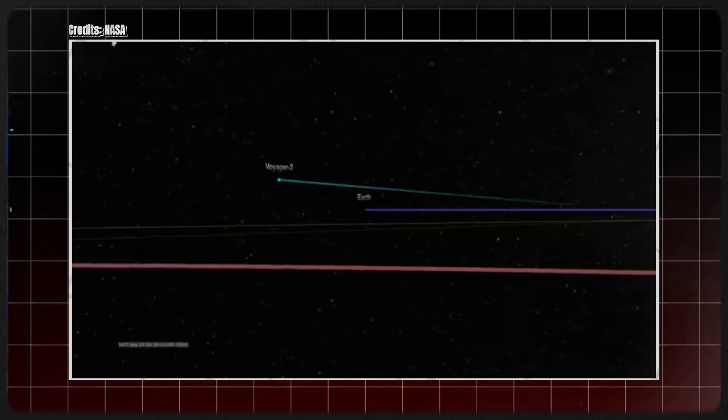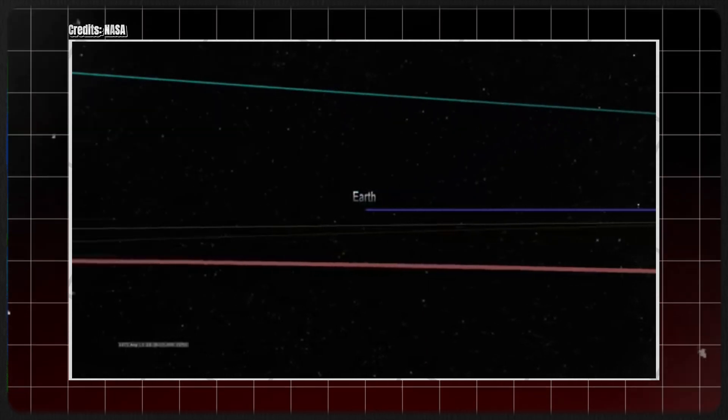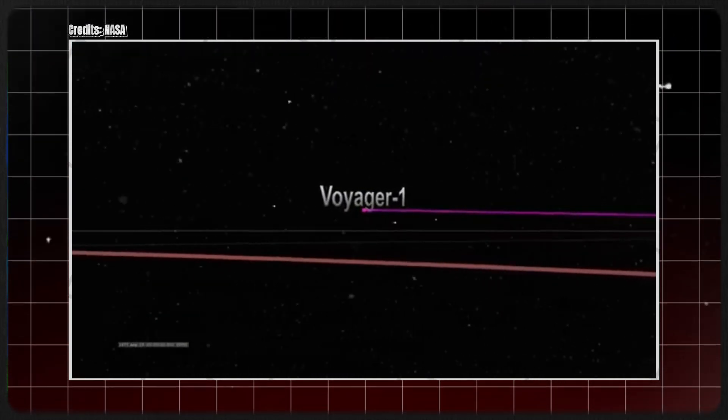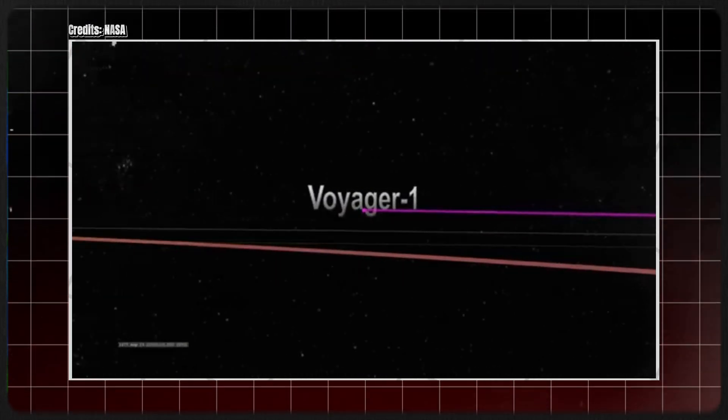Voyager 1 reached Jupiter 546 days after its launch in March 1979, while Voyager 2, on a different trajectory, arrived in July of the same year.